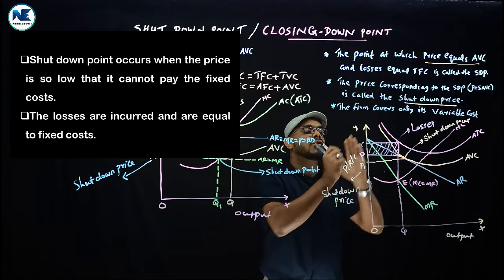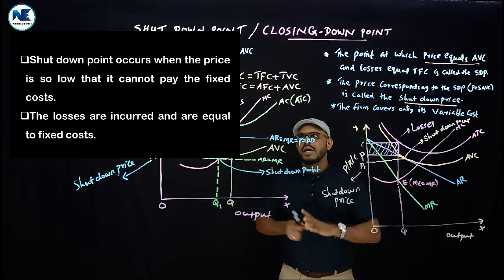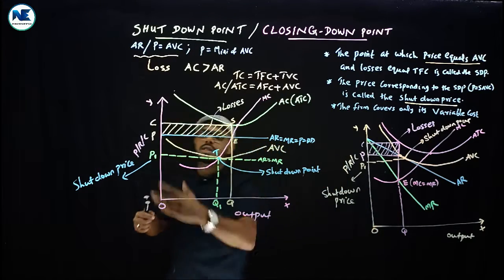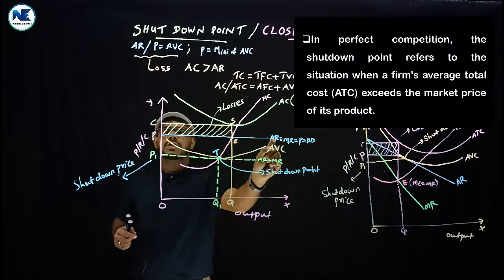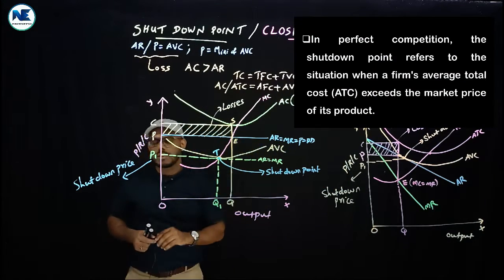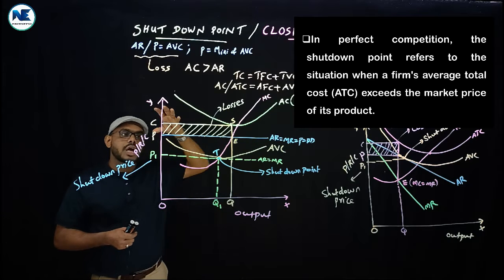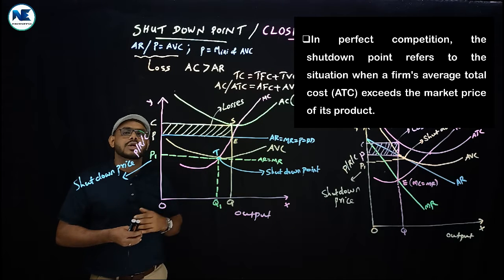In perfect competition, at this point the firm covers only its variable cost with a horizontal demand curve. In monopoly and monopolistic competition, the demand curve is downward sloping with average revenue and marginal revenue curves.